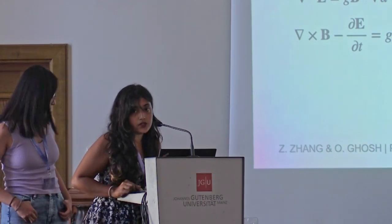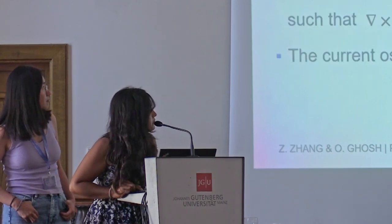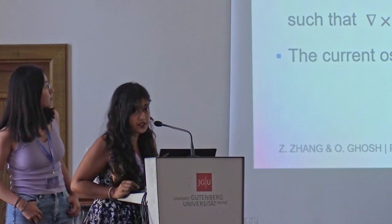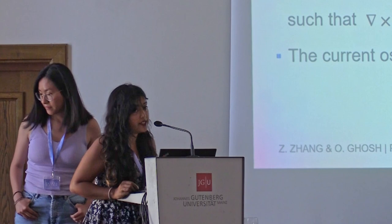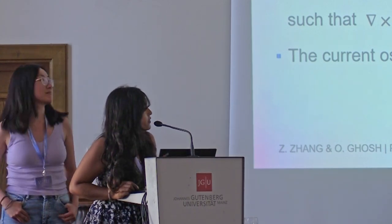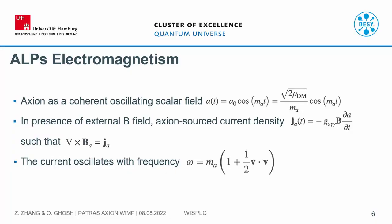The time derivative depends on the local dark matter density. We can use axions as a coherent oscillating scalar field, and it will oscillate with this frequency. In the presence of an external magnetic field, the axion will act as a source for the current density, given by this term. This can induce a magnetic field perpendicular to this current density, and this brings us to the detection scheme of the WISPEL-C experiment.